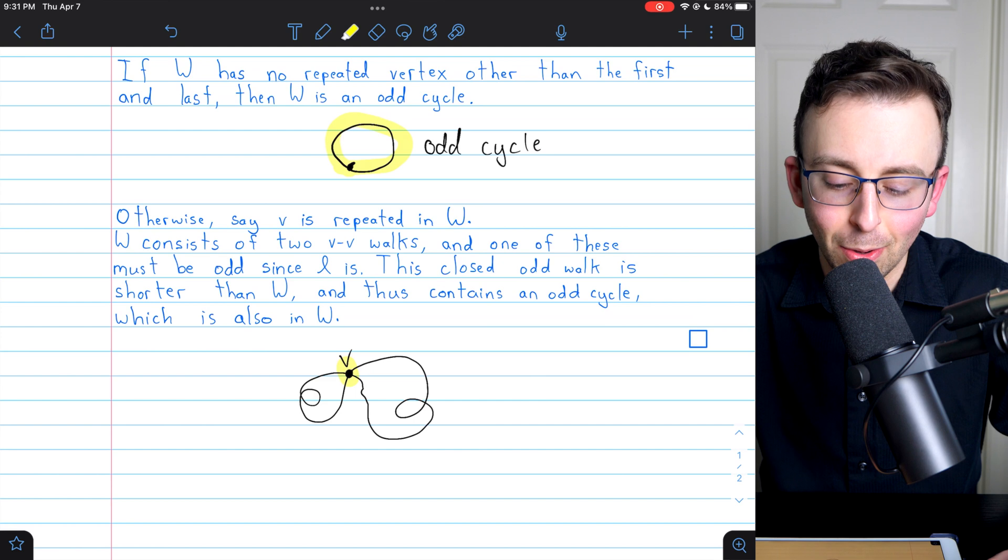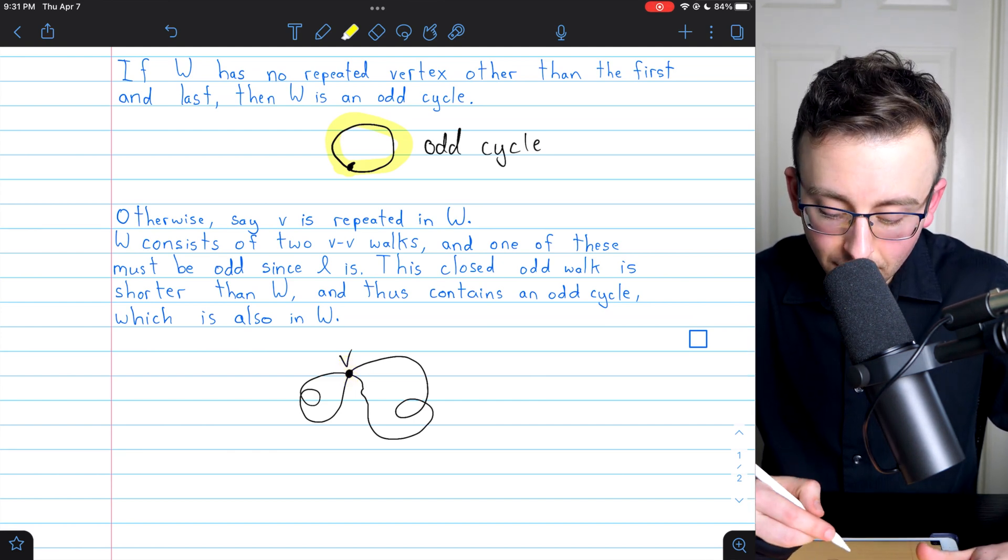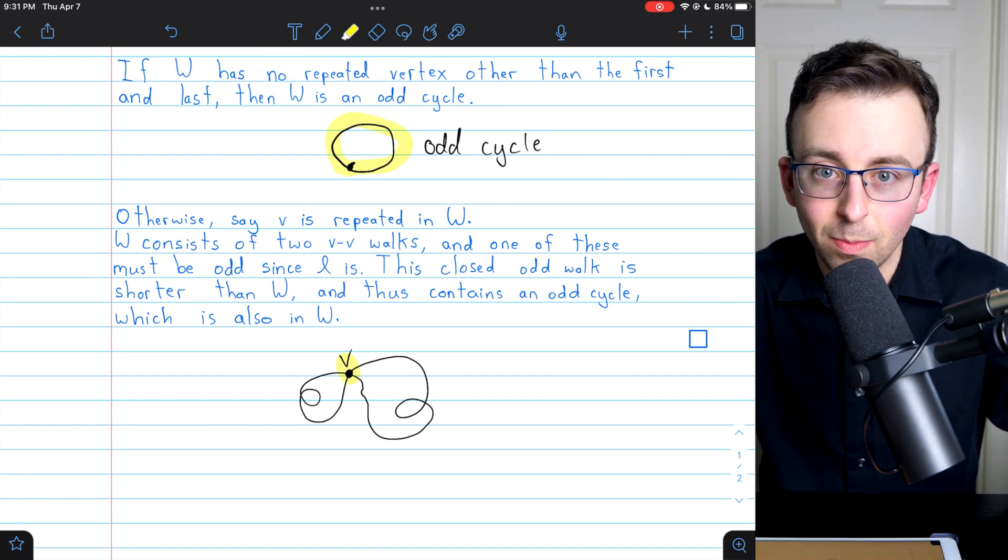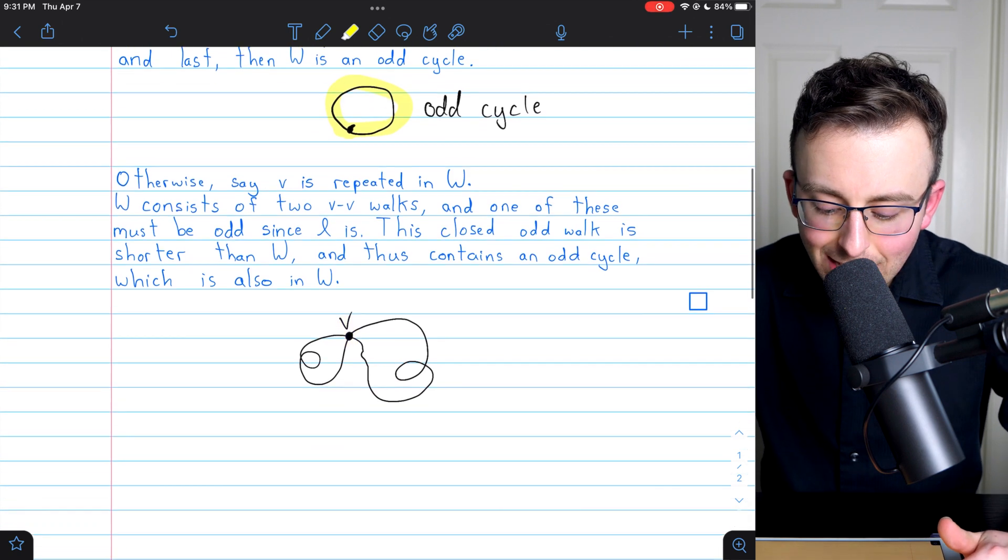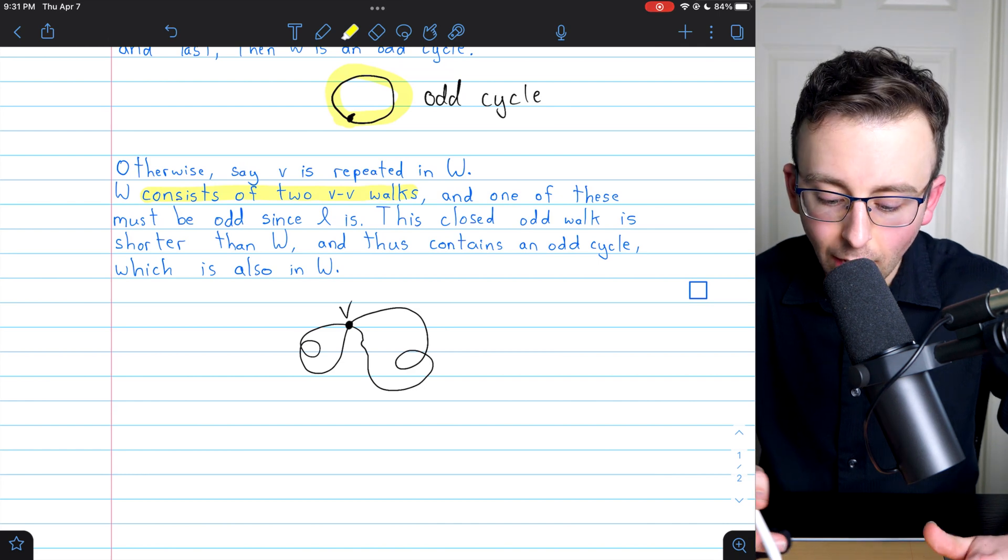There's nothing super special about it. But what you have to notice, though, is if W does have this repeated vertex V, other than just starting and ending at the same vertex, then we can think of W as consisting of two VV walks.